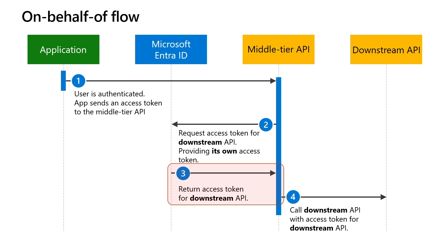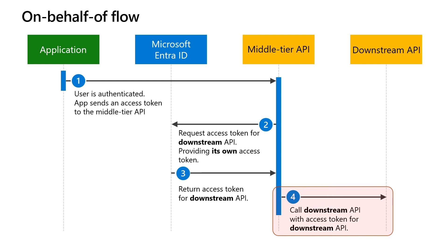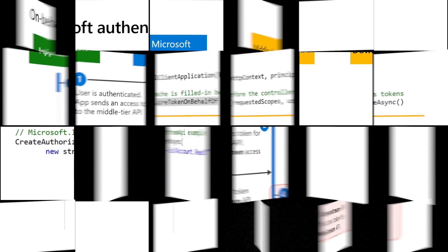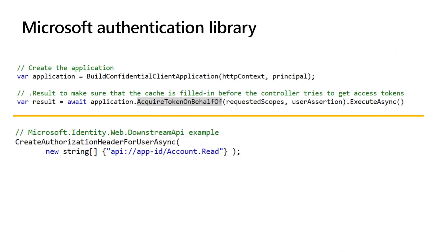This is why the flow is called On-Behalf-Of — because Microsoft Entra ID issues a new access token on behalf of the user. After acquiring the new access token, the middle tier API invokes the downstream API passing the new access token. The downstream API validates the access token permissions and audience, processes the request, and returns data back to the caller. No worries — the Microsoft Authentication Library (MSAL) and Microsoft Identity Web library do everything for you.